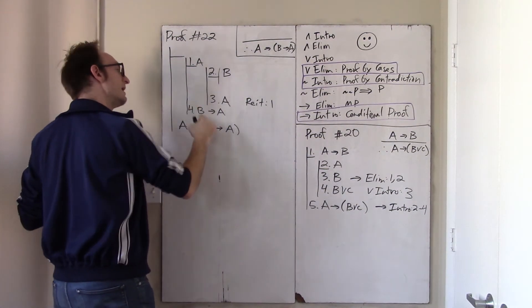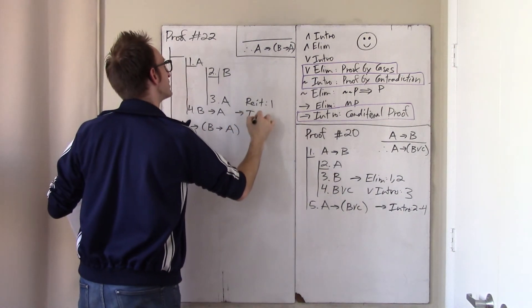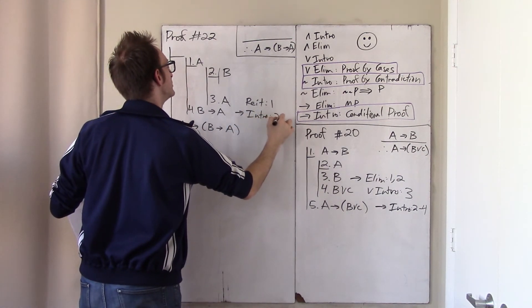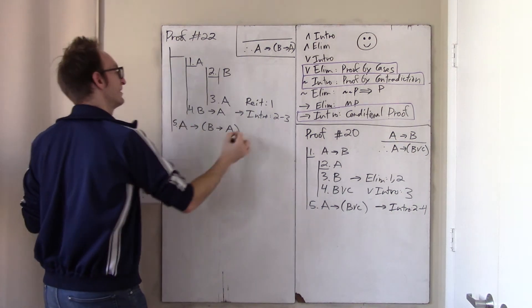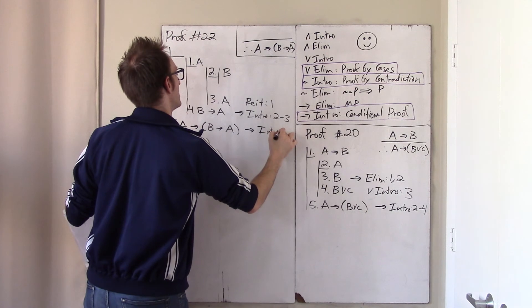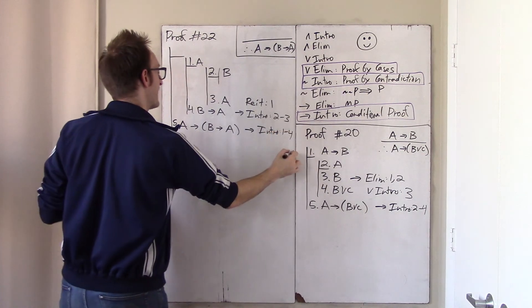Here it is. What is this? Arrow intro, two through three. And this, line five, is arrow intro, one to four.